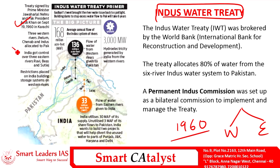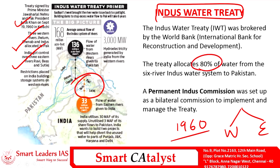The west bank tributaries include the rivers Jhelum, Chenab, and Indus, and the waters from these three tributaries are allocated to Pakistan. The east bank tributaries include the lower tributaries — Ravi, Beas, and Sutlej — and the water from these three tributaries are under the control of India.